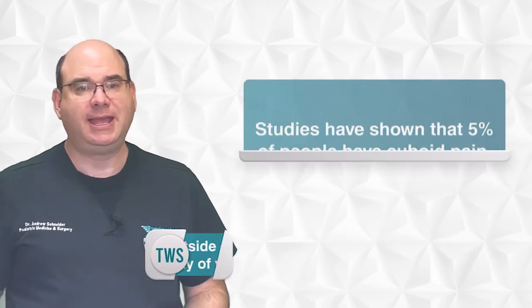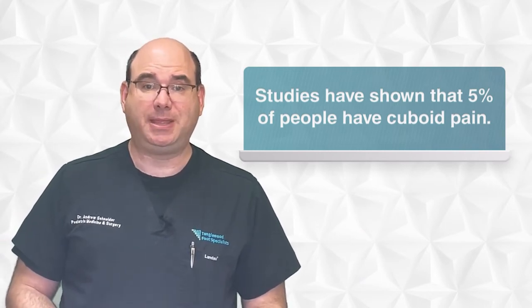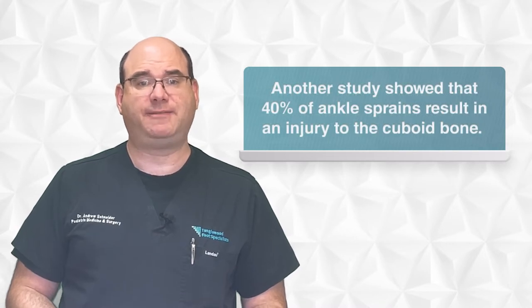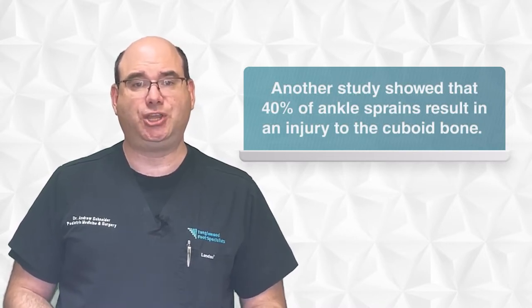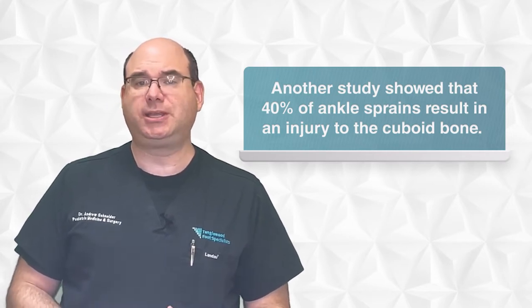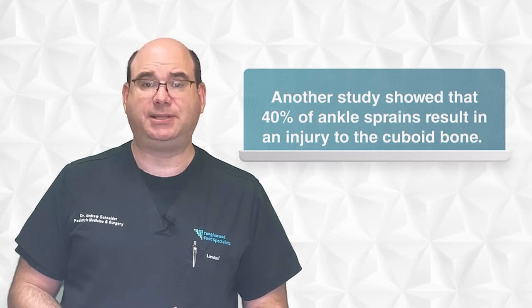Studies have shown that 5% of people have cuboid pain. That's a lot of people in pain. Another study showed that 40% of ankle sprains result in an injury to the cuboid bone, not a fracture or anything like that, but usually a dislocation or a subluxation, and it hurts with every step you take.